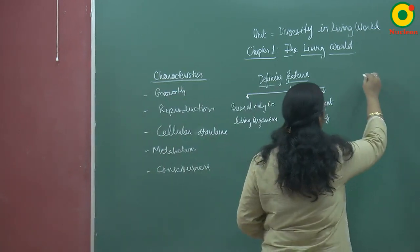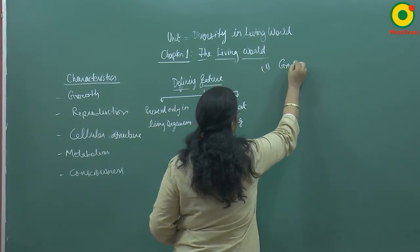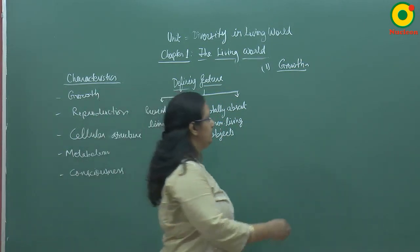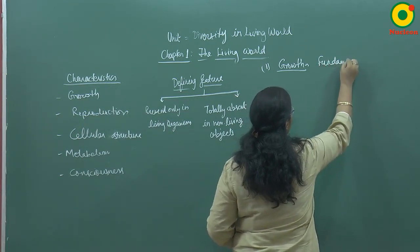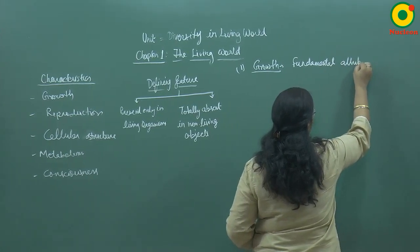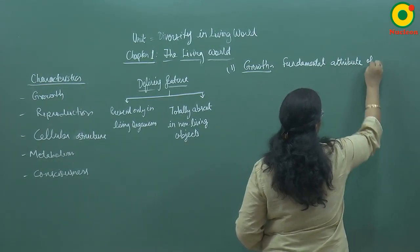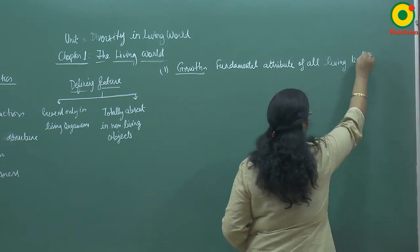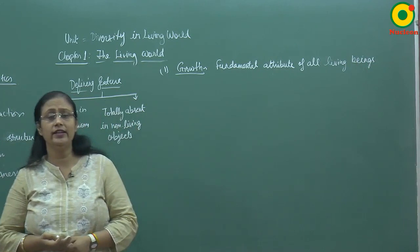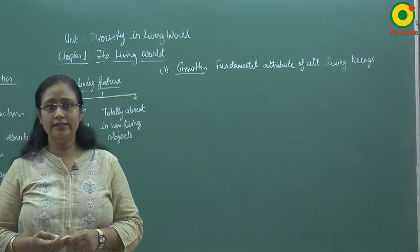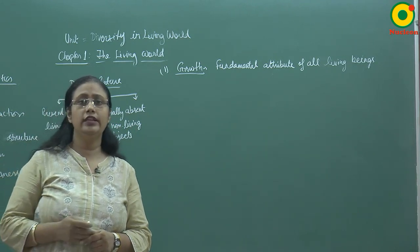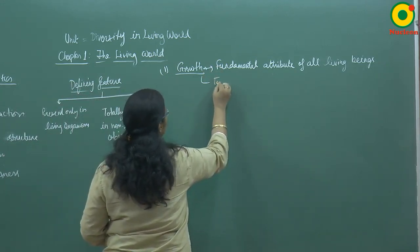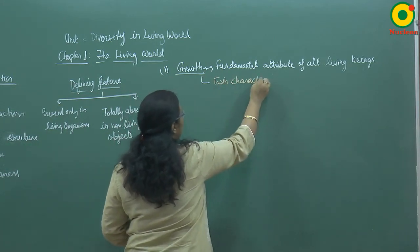First, I am going to start with the first feature, that is growth. What is growth? Growth is the fundamental attribute of all living beings. Growth shows twin characteristics: growth in terms of the increase in mass of the body, and growth in terms of the increase in the number of cells.